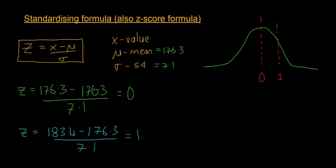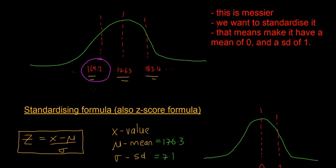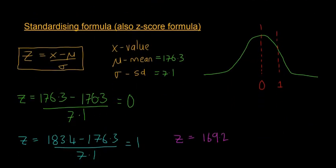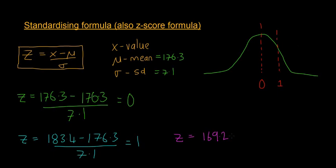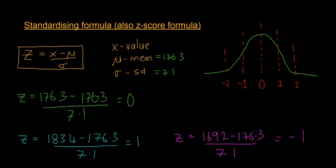In purple: z equals 169.2 minus 176.3 divided by 7.1. We're finding what minus one standard deviation maps to on our standard normal. Pop that into your calculator and you get a value of minus one. So we mark that in as minus one. We can keep going for two standard deviations and so on, but the point is we've now standardized our normal distribution — giving it a mean of zero and a standard deviation of one — which makes it a lot easier to work with.